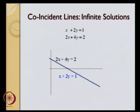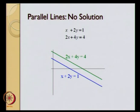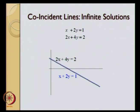In both these cases, the matrix A is going to be [1, 2; 2, 4], and if we take the determinant of matrix A, it is going to be 4 minus 4 equal to zero. So if the determinant of matrix A is equal to zero, we do not have a unique solution. And if the determinant of matrix A is not equal to zero, then we will have only one solution. If we do not have a unique solution, we can either have no solution or we can have infinite number of solutions.